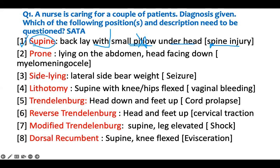Prone - laying on your abdomen with head facing down. An example is myelomeningocele. These patients usually have a spinal neural tube defect with fluid, nerves, and spinal cord covered with basically a sac in the sacral area. You lay them in the prone position, so that's appropriate. You lay them on the abdomen, but the head should be facing on the side. So this one we have to intervene - the first portion is right, but the head position is wrong.